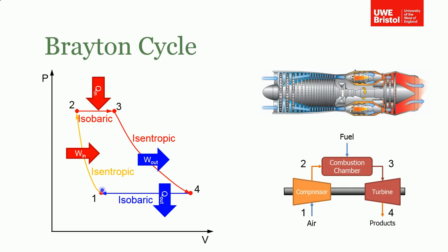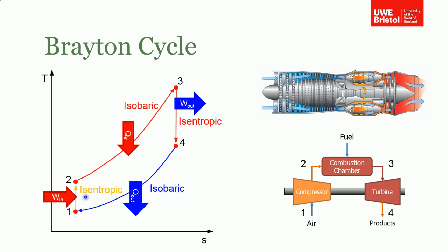To close the cycle we have isobaric heat rejection. The same thing can be shown on a TS plot. On a TS plot, an isentropic process is a straight vertical line where only temperature changes; as we add heat we have the isobaric process showing an increase in temperature and entropy; then isentropic work output; and finally isobaric heat rejection where temperature and entropy both drop.